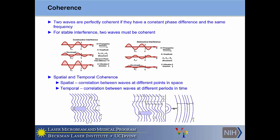Essentially, coherence is a measure of the correlation of two waves either in time or space. In order to perform perfectly constructive or perfectly destructive interference, two waves must have a constant phase difference and the same frequency. Note that the two waves don't have to have the same wavelength — they have to have the same frequency. Slightly different, but a key understanding for this field.